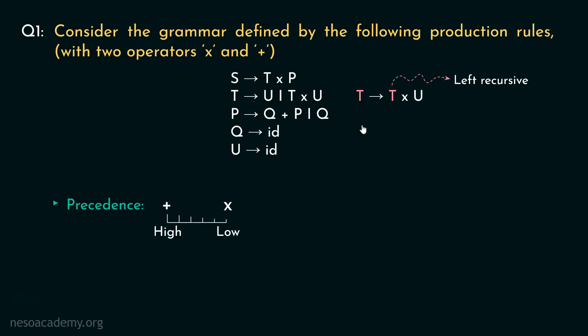Consider this production rule on the other hand. P can be rewritten as Q plus P. Observe. For this rule, the non-terminal P is reoccurring as the rightmost non-terminal. And therefore, it is a right recursive production rule. So, the addition operator is right associative.